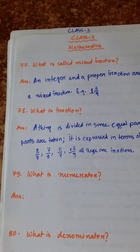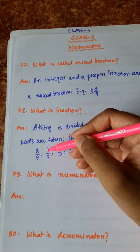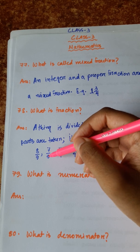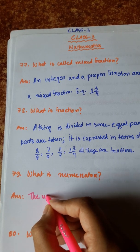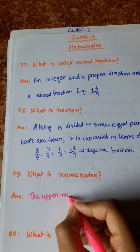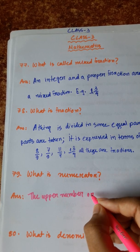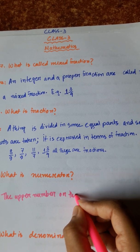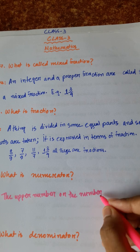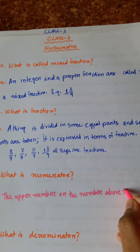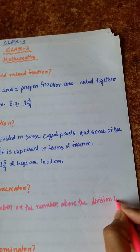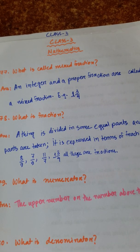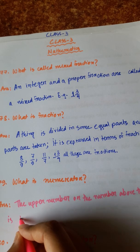Question 79: What is a numerator? In a fraction, the numerator is the upper number. The number above the division line of a fraction is known as the numerator.